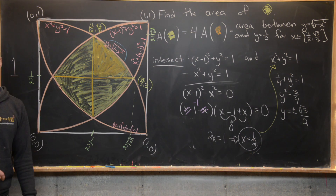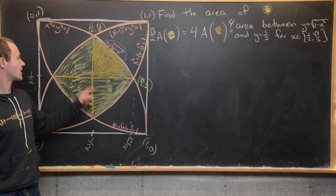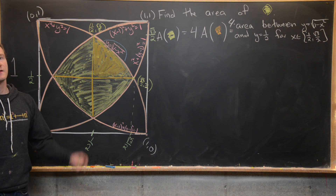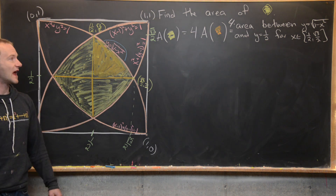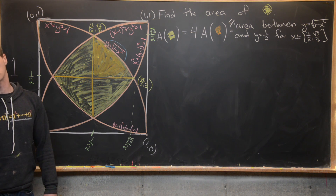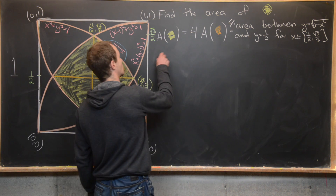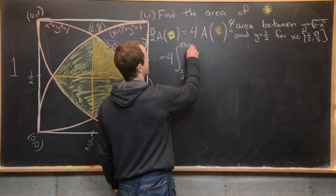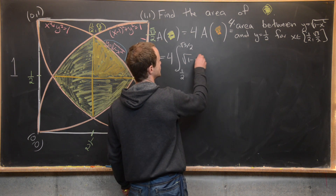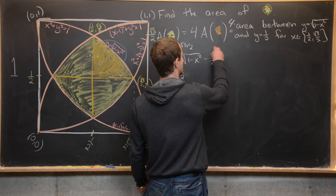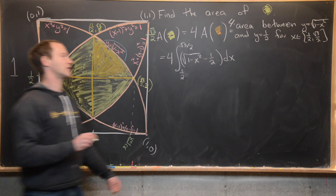The area of the yellow region equals four times the area of the orange region, which is four times the integral from 1/2 to √3/2 of (√(1 - x²) - 1/2) dx.